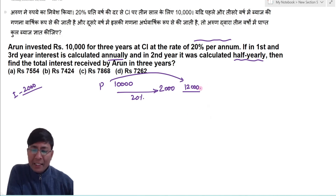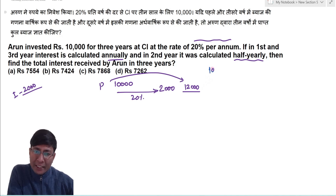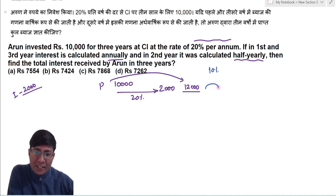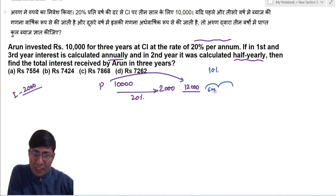In the second year, the rate of interest is 10% and the time period is 2 half-yearly periods — that is, 6 months and 6 months.